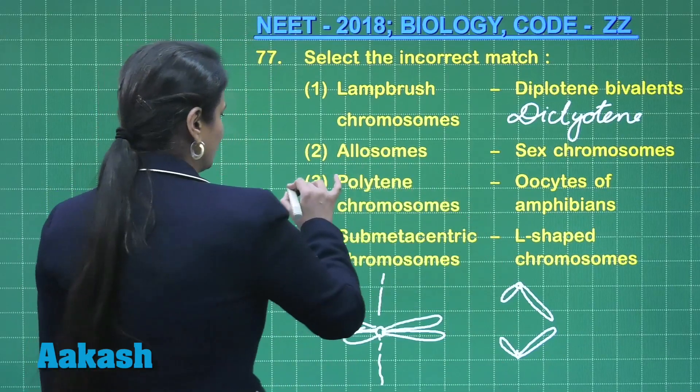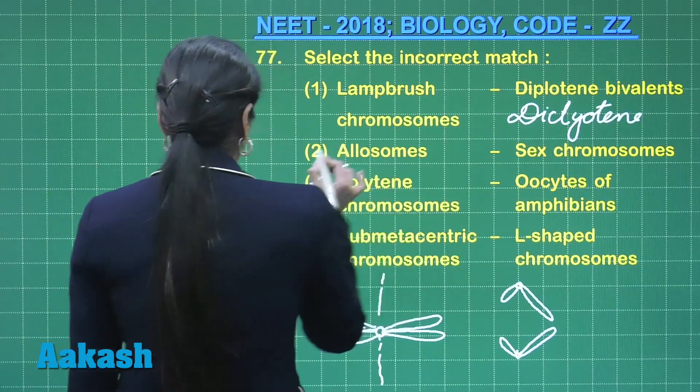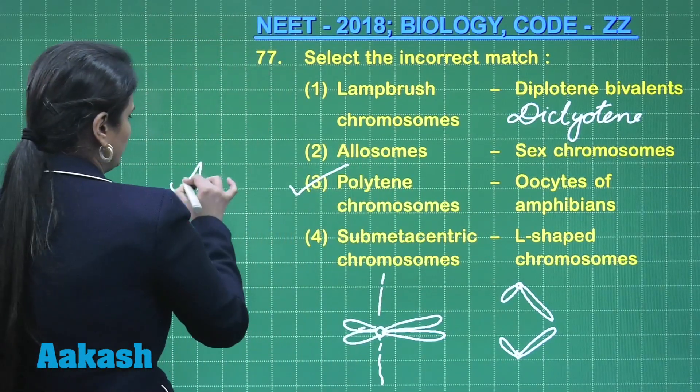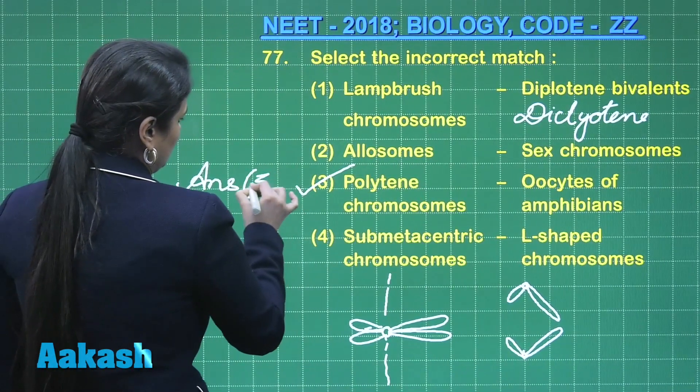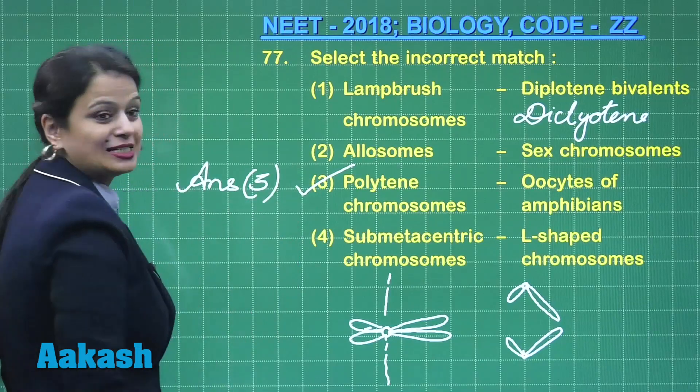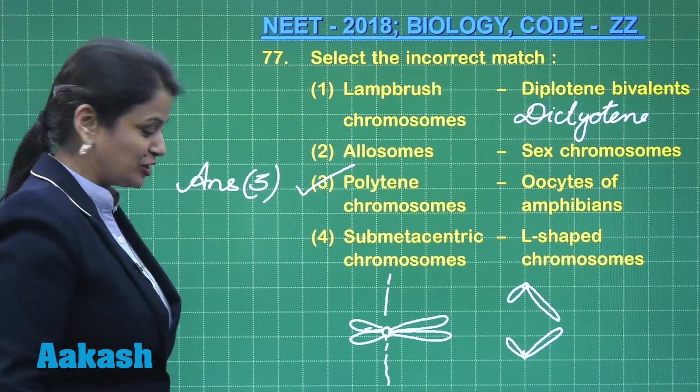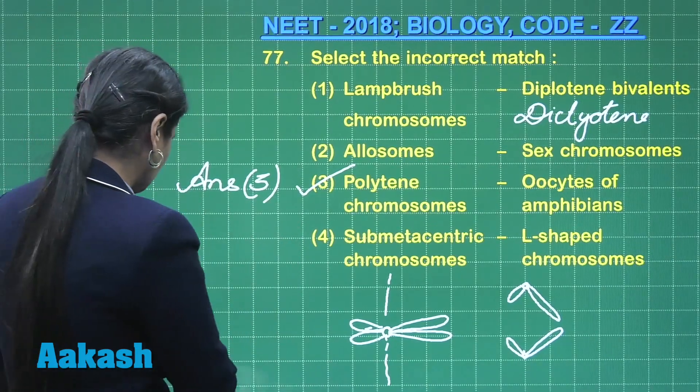So out of these options, the incorrect one is option number three. Now let's move on to question number 78.